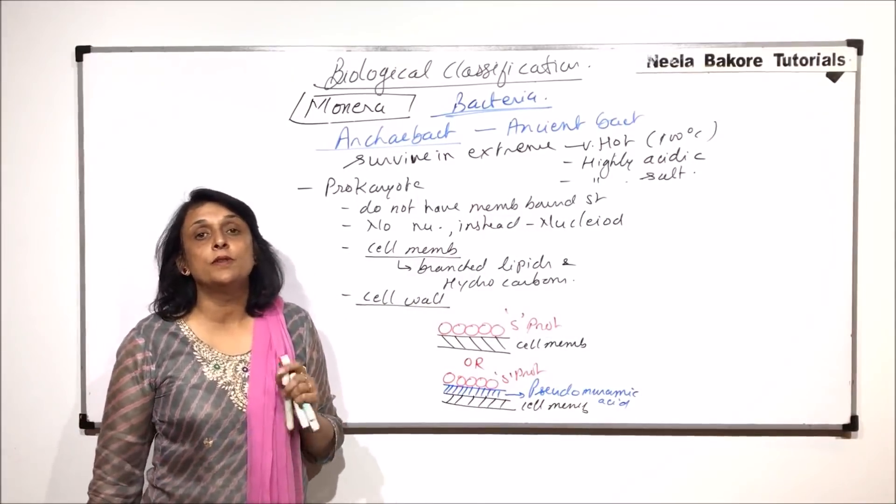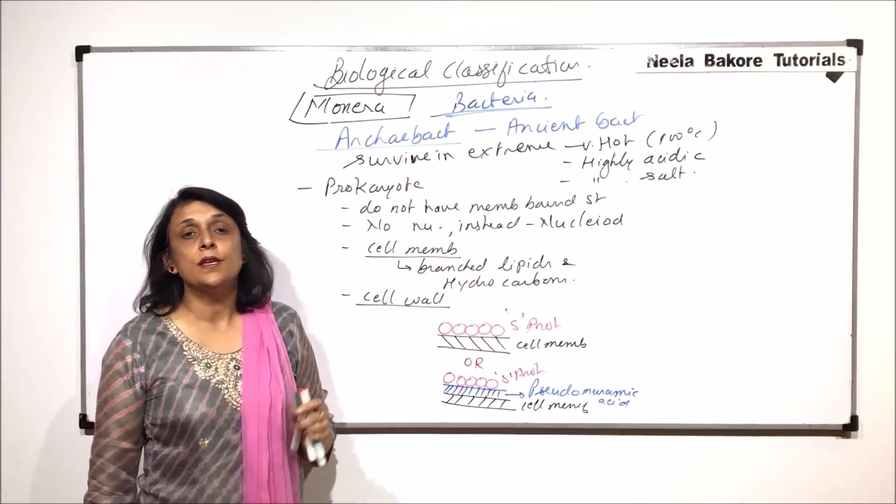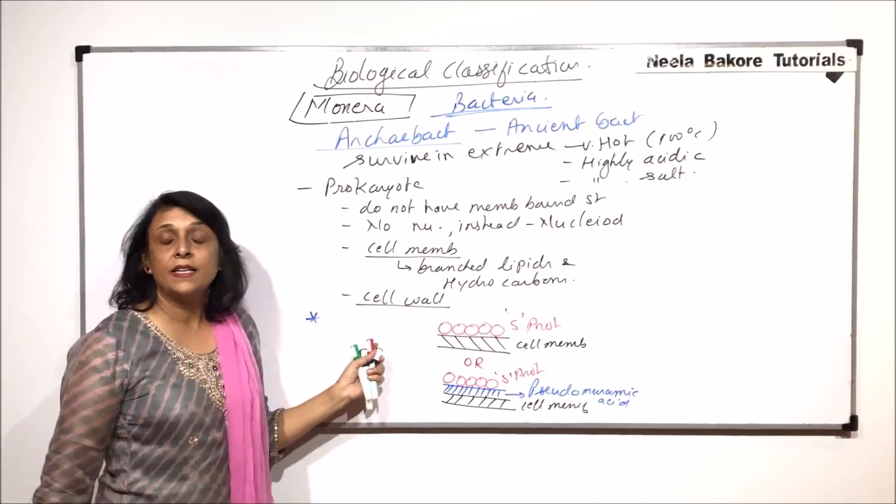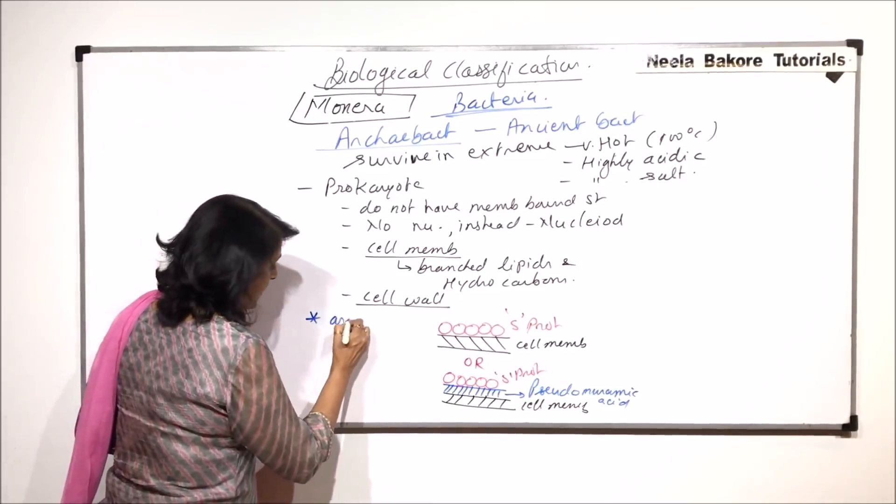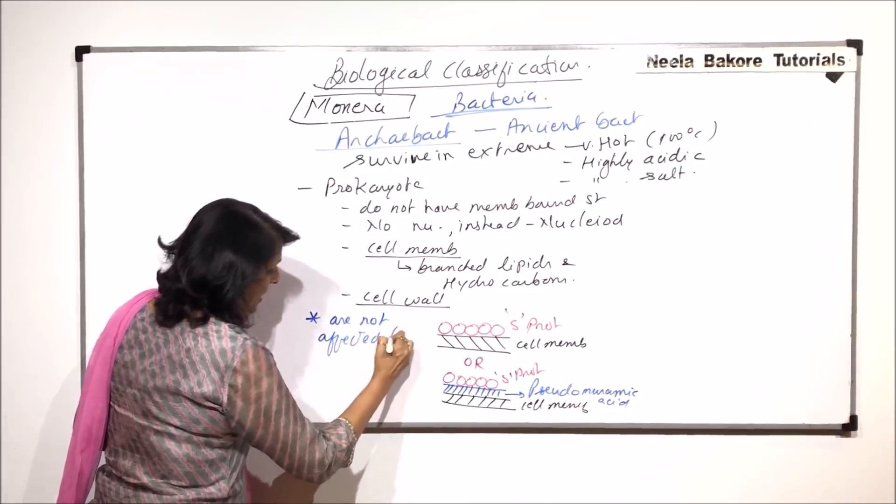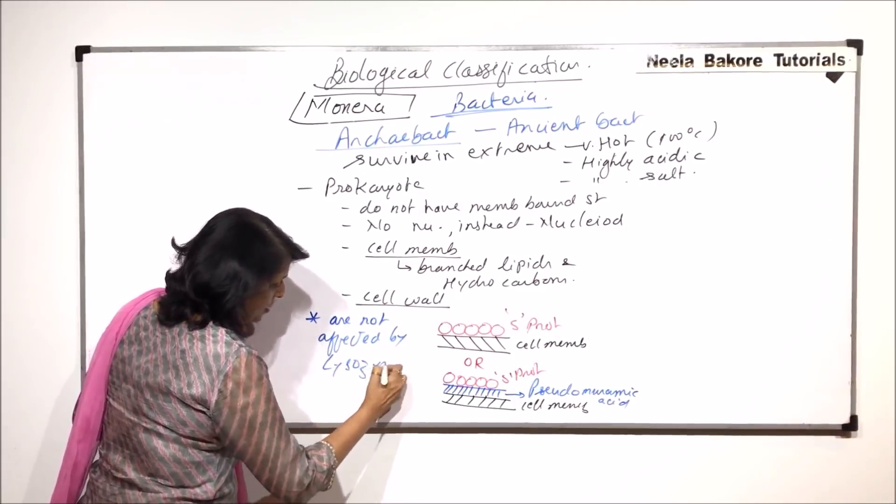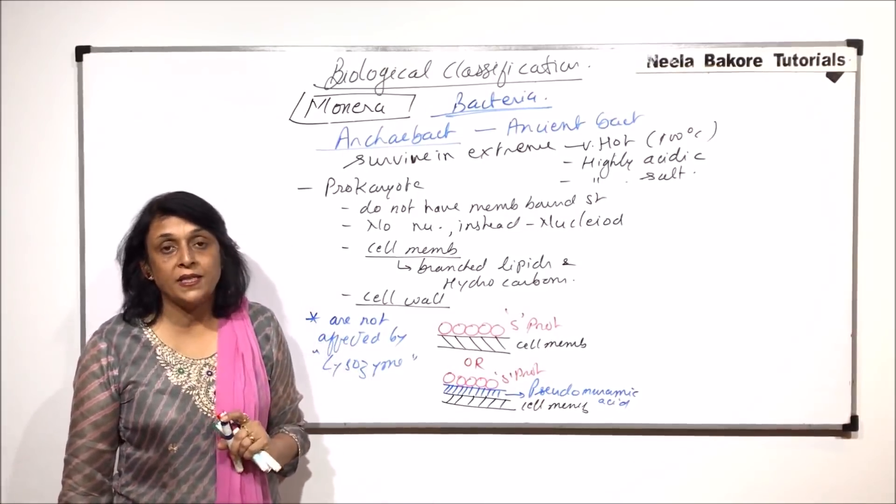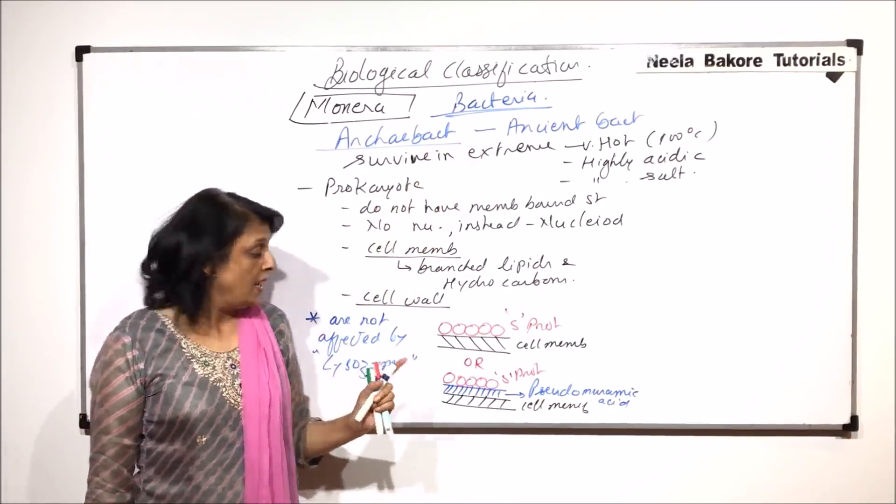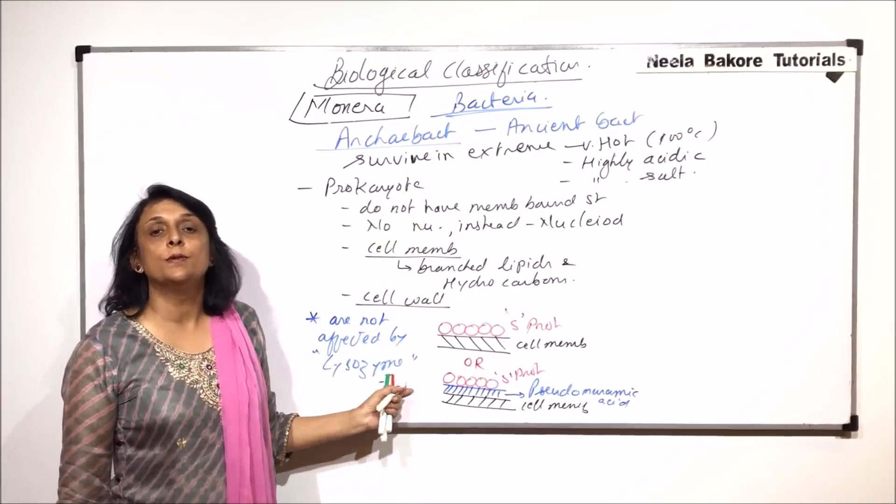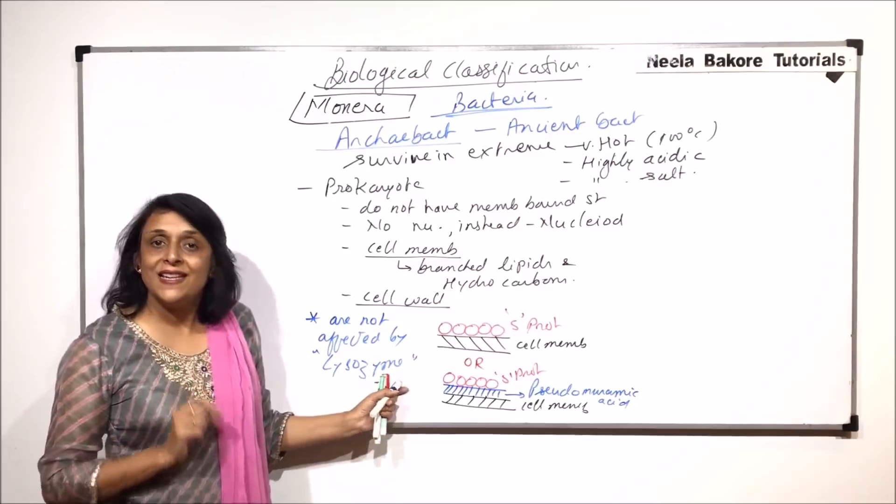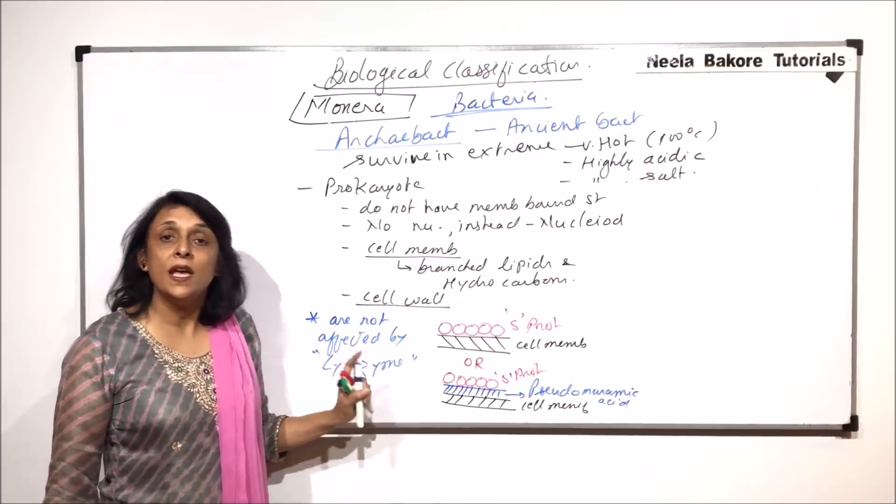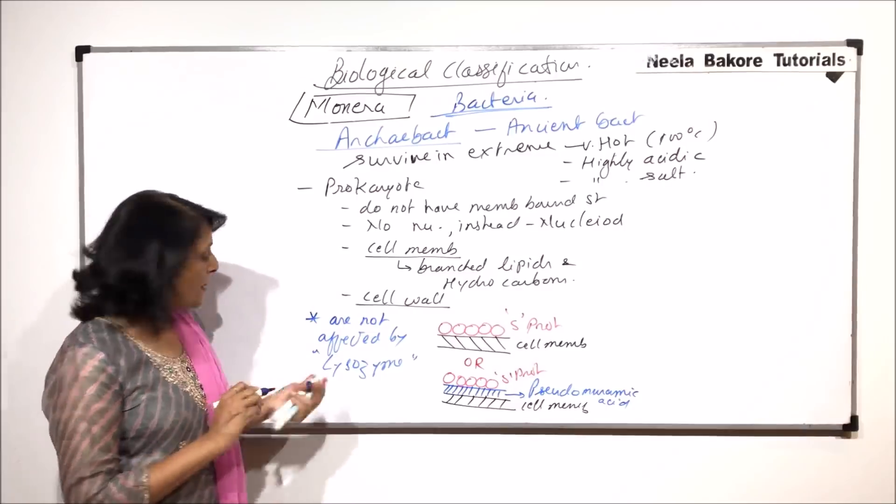So there is a special type of cell membrane and a special cell wall. These two structures are responsible for these archebacterians to survive in all extreme conditions. And this is the same reason why archebacterians do not get affected by lysozymes. They are not affected by lysozyme. So lysozyme is a chemical which we call the bactericidal. It ruptures the cell wall of bacteria. That means lysozyme is a chemical which can damage or dissolve peptidoglycan cell wall. But if the cell wall is made up of something else then this substance lysozyme is totally ineffective in case of archebacterians.